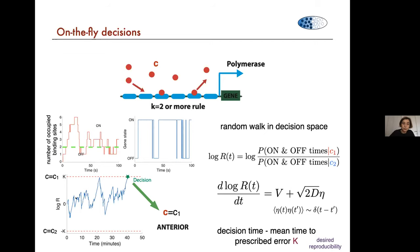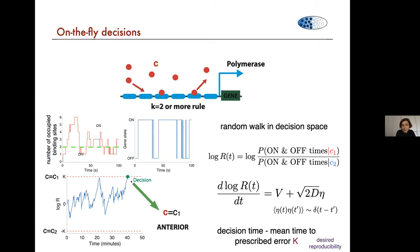This log likelihood ratio defines a random walk in decision space. Every time you add information, you bias yourself more toward either the high-concentration or low-concentration decision. In the limit of it being a very hard problem with many binding and unbinding events, you can approximate this random walk in decision space as a continuous diffusion problem with some drift — your bias — and some diffusion describing the uncertainty. The problem of making a decision — deciding whether it's low or high concentration — is basically the mean first passage time to reaching some prescribed error. You say: I'm going to make my decision when my error falls below this rate.